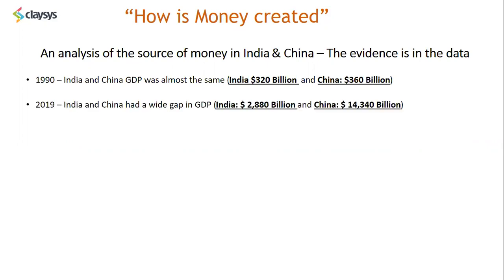In 2019, just about 30 years later, there is a very wide gap in the GDP of India and China. In India, we did see a significant amount of growth and our GDP today is in the region of 2.8 trillion dollars. And the GDP in China, on the other hand, is 14.3 trillion dollars — significantly higher.